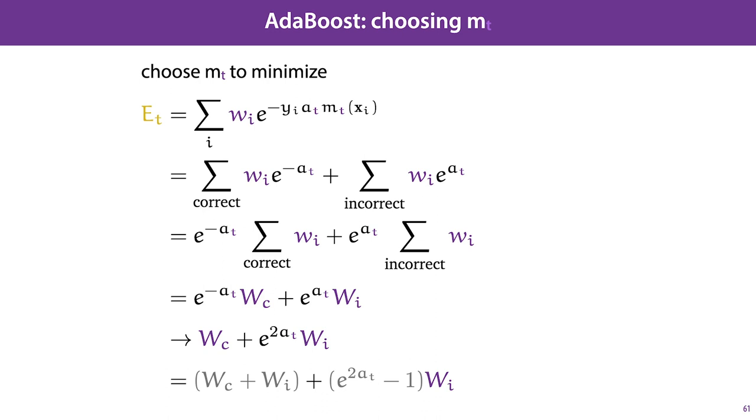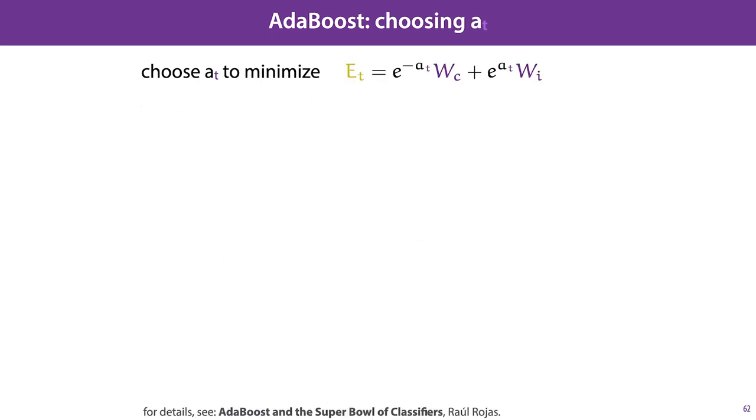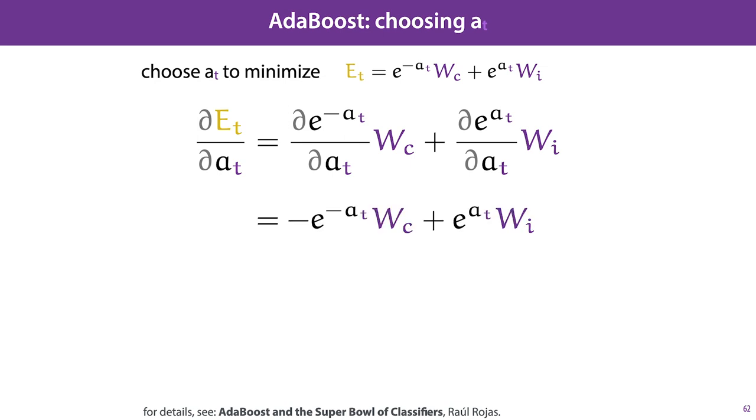Next, we need to decide how to choose the model weight AT. So we return to this formulation of our error, and this time we keep the weights fixed, and we want to minimize the value AT. Here we take a more traditional approach, and we look at the derivative of our error with respect to the value AT. WC and WI are constants for this derivative, so we're just left with the derivative for the negative exponential and for the exponential. The first is the negative of the negative exponential, and the second is the exponential. And if we set this equal to zero and rewrite, we find that AT works out as one-half times the logarithm of the ratio between the sum weight of the correctly classified instances and the sum weight of the incorrectly classified instances.